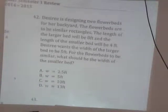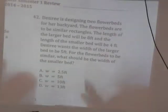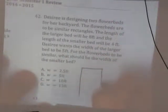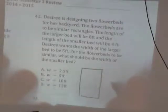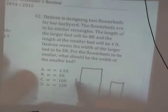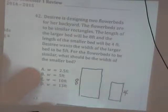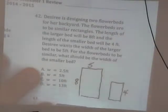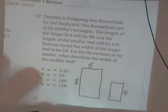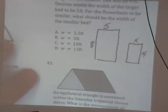Alright, next one. Desiree is designing two flower beds for a backyard. The flower beds are to be similar rectangles. The length of the larger bed will be 8 feet, and the length of the smaller bed will be 4. So let's draw that. 8, 4. Desiree wants the width of the larger bed to be 5. For the flower beds to be similar, what should the width of the smaller one be? Okay, so what proportion should we set up?